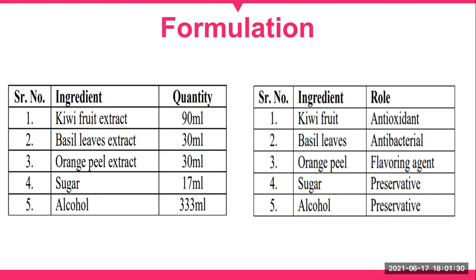We have a formulation example using kiwi extract, basil leaves extract, orange peel extract, sugar, and alcohol. Based on the ingredients, we first go for extraction, then boiling, and finally volume make-up. Kiwi provides proteins and acts as an antioxidant. Basil can be used as an antibacterial. Orange peel serves as a flavoring agent. Sugar is used as a preservative in small quantities, and alcohol also acts as a preservative.